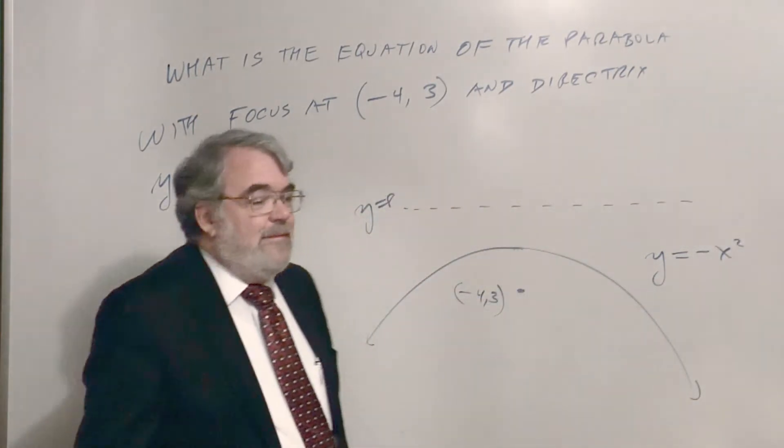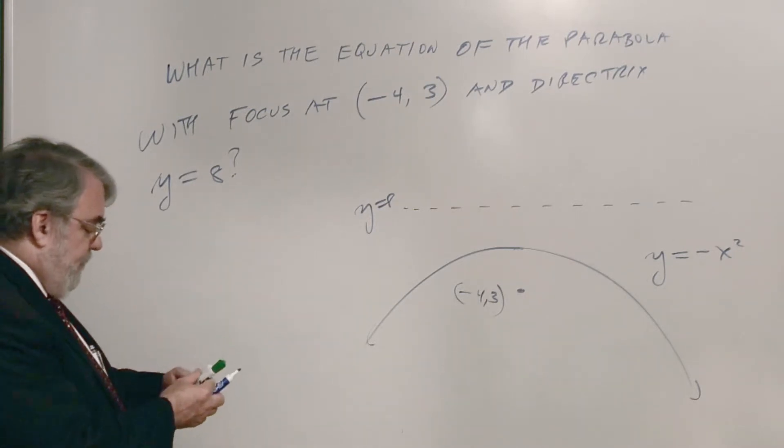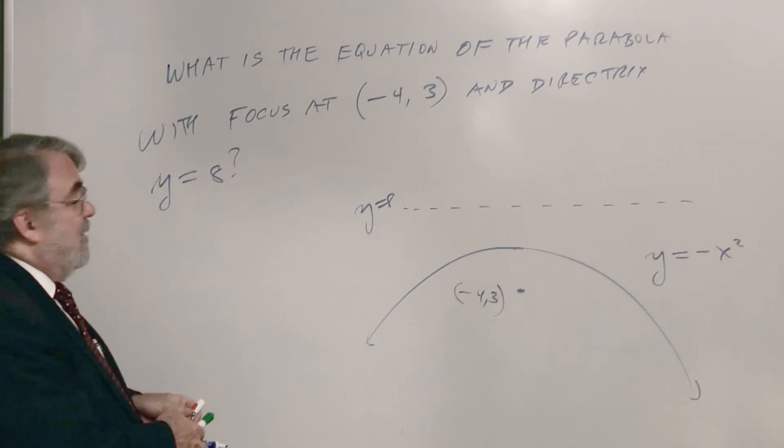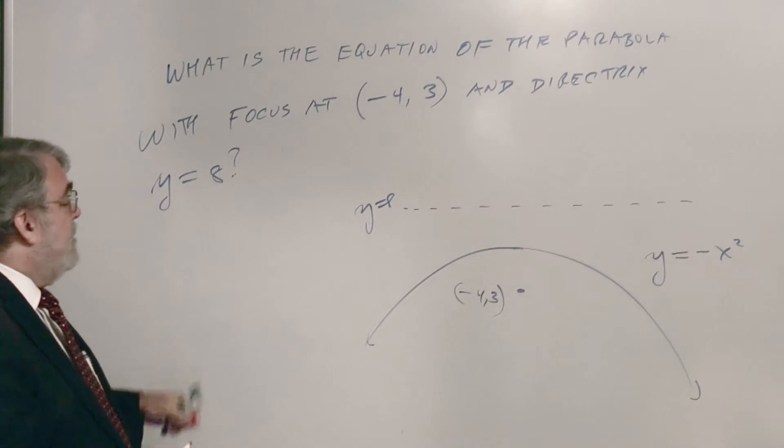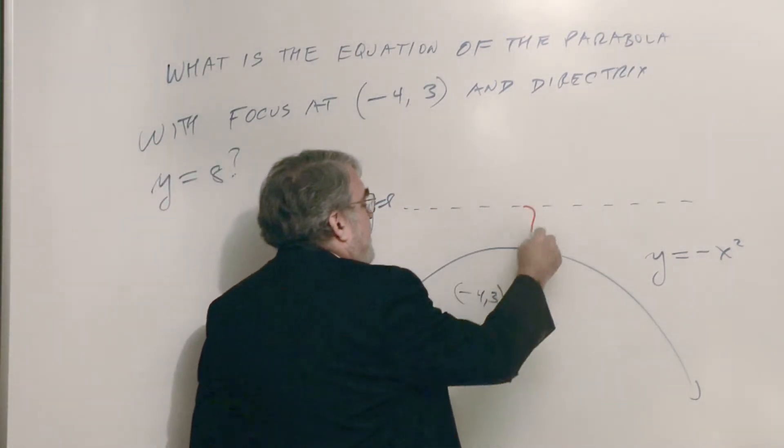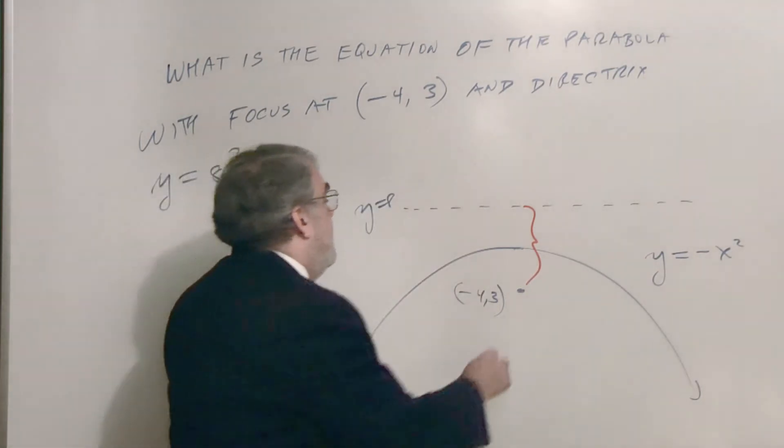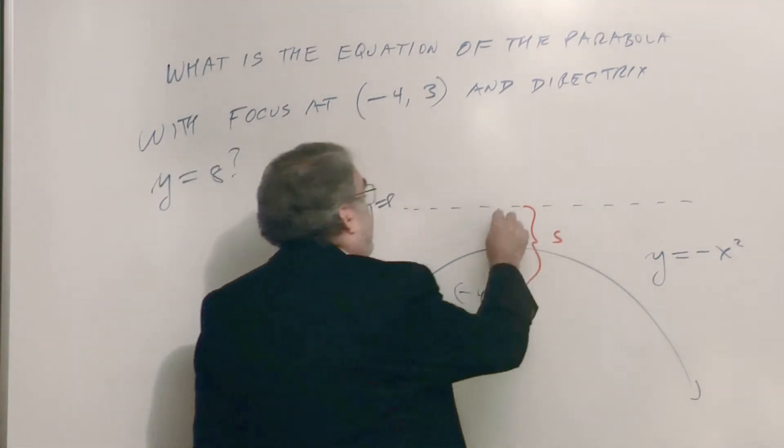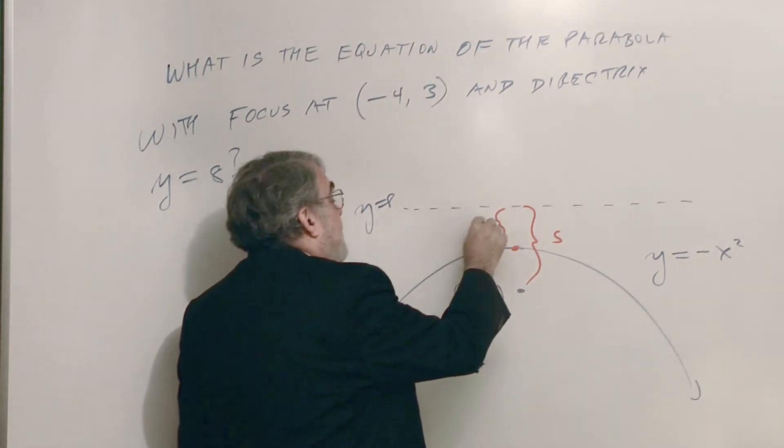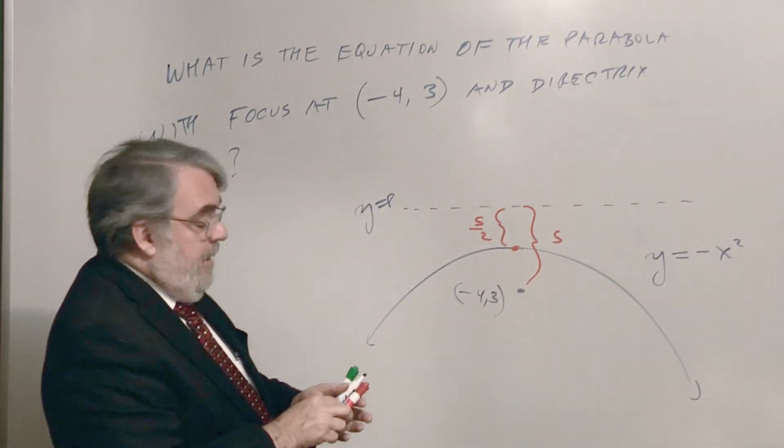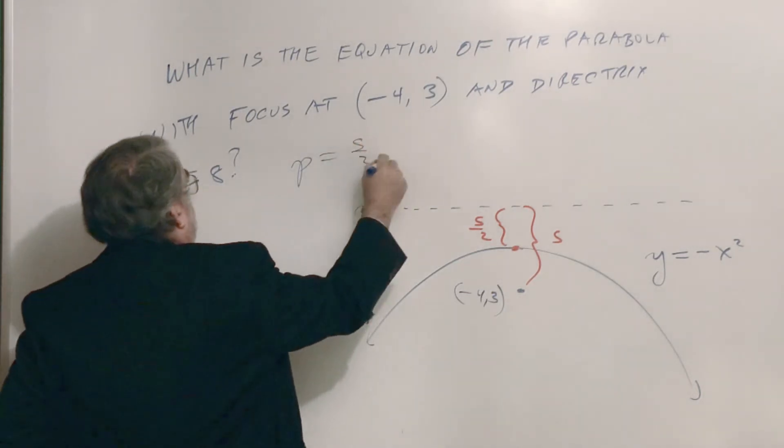So that means this one is going to have the form y equals minus x squared. Now that's not the equation of this parabola, but the format is in that form. Okay. Now, I think I made this a little mess here. Because the vertex, I think, is going to be at a fraction. This total distance is eight minus three. Eight minus three is five. So that means the focal length is going to be half of that, five halves. So p equals five halves.